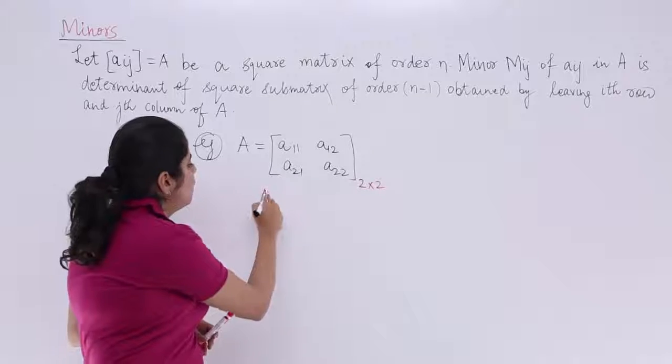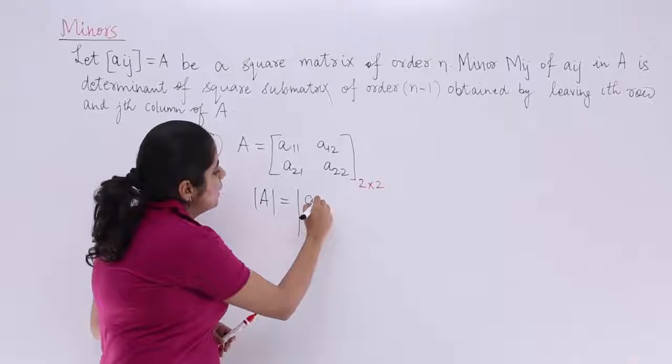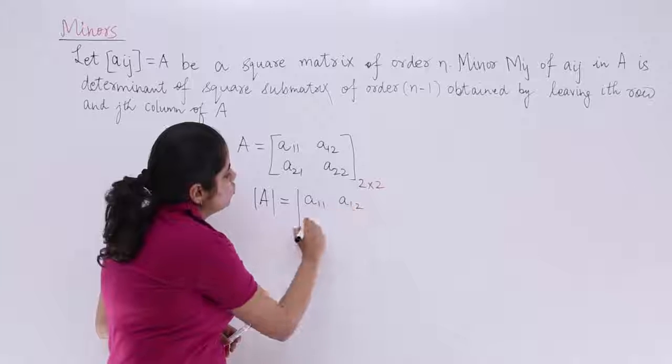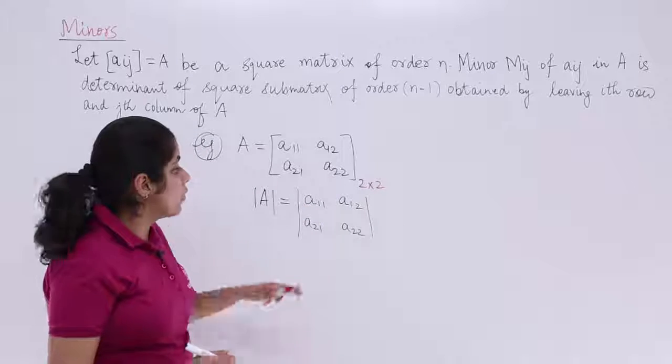First of all, you have to deal with its determinant. So what is its determinant? It is A11, A12, A21, A22. And what to follow?